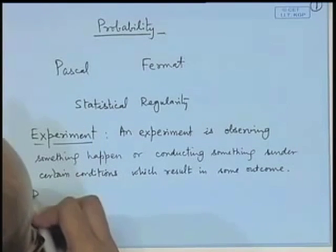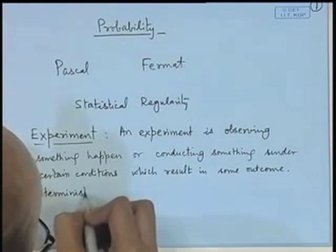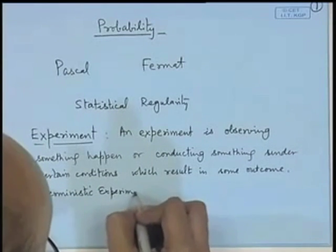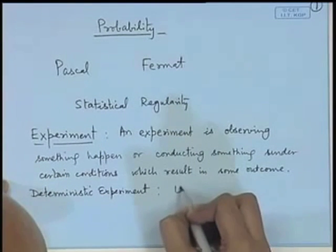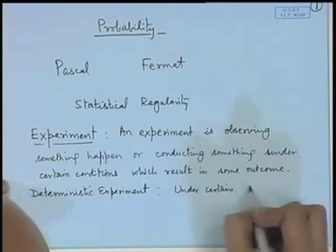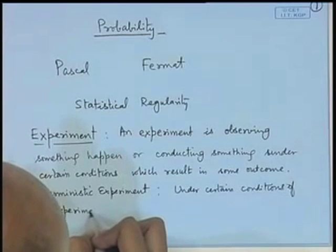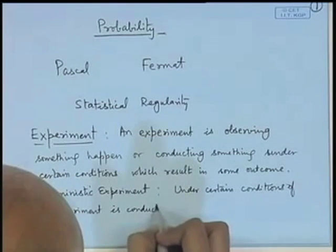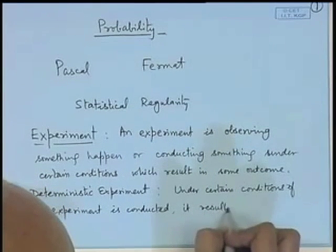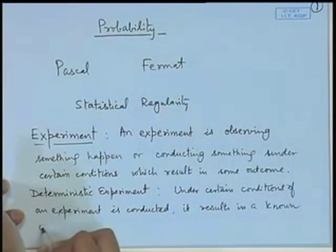You must be familiar with many experiments done in physical, chemical, and biological sciences. For example, we have various experiments in chemistry where certain chemicals are mixed and result in some compound being made. Broadly speaking, we segregate experiments into two types. One is the deterministic experiment. In deterministic experiments, under certain conditions, if an experiment is conducted, it results in a known outcome.